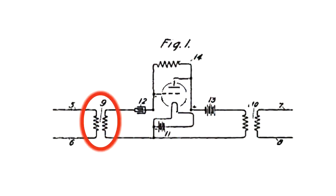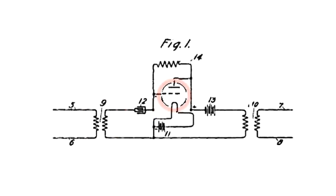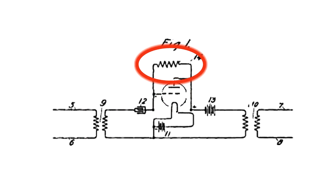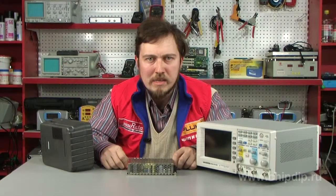The input signal went through the matching transformer and feed-through capacitor, and then reached the grid. After amplification, the signal followed to the primary winding of the output transformer.